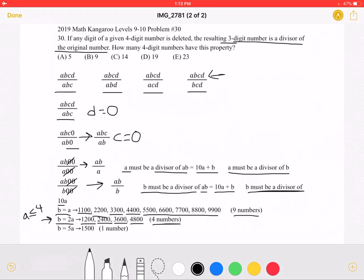Or we could have B equal to 5A. And there's only one number for which this works because if A is greater than 1, it wouldn't work because B would be 10 and they must both be digits. So we would have 1500, one number. So 9 numbers plus 4 numbers plus 1 number would give us a total of 14 numbers, which is answer choice C.